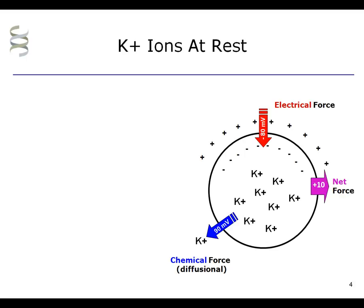The net force is 90 millivolts outward minus 80 millivolts inward. So, when the membrane potential is at rest, the net force is outward with a magnitude of 10 millivolts. The direction of the net force is in the same direction as the chemical gradient for potassium.